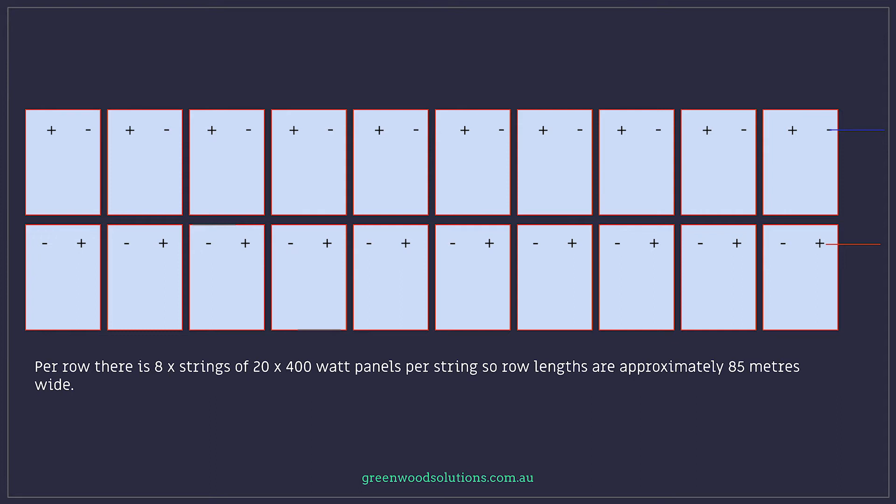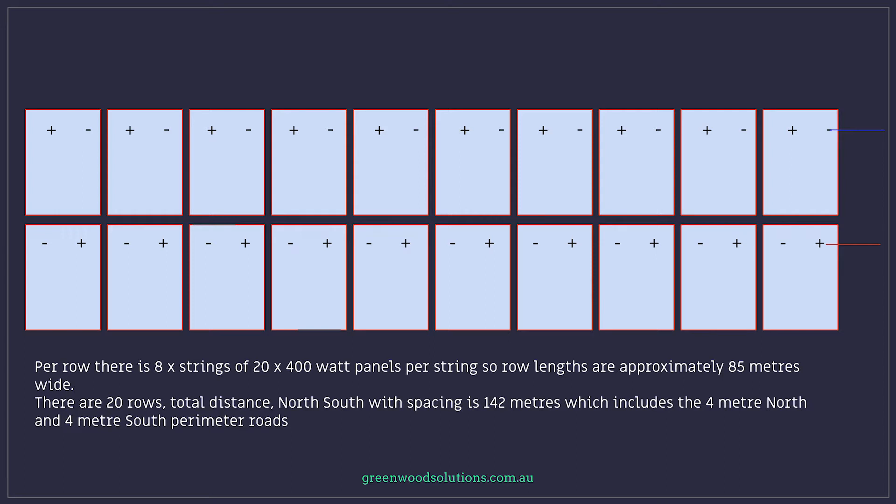Per row there's eight strings of 20 by 400 watt panels per string, so row lengths are approximately 85 meters wide. There are 20 rows, total distance north-south with spacing is 142 meters, which includes the four meter north and four meter south perimeter roads.